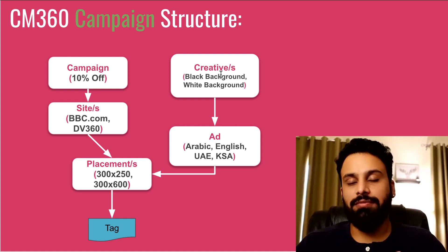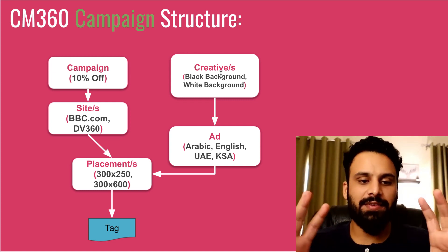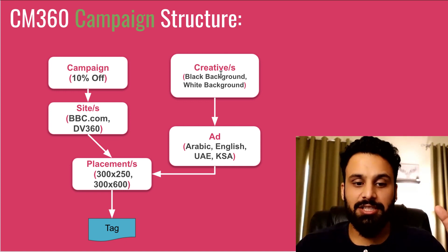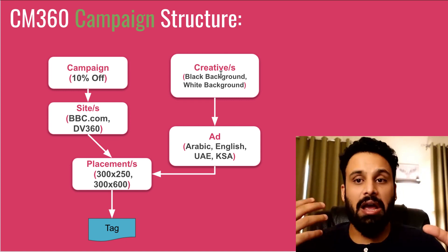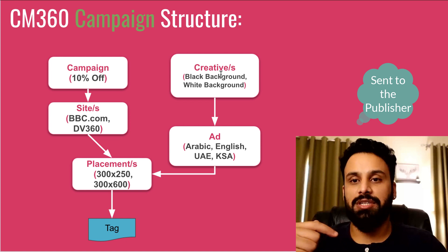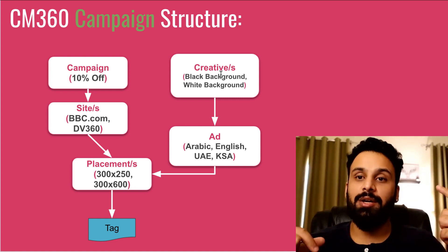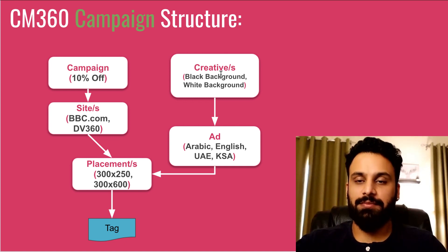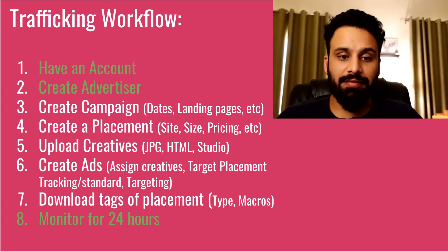The structure is: a campaign targeted to one or multiple sites; each site has placements depending on how many sizes you're targeting; each placement generates a tag sent to the publisher; and to each placement you target an ad which contains one or multiple creatives that will actually serve. This is how all the entities connect in Campaign Manager 360.